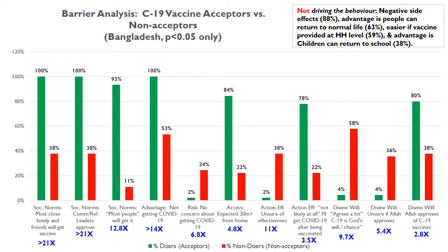Instead, here are the things that were most highly associated with intending to get a COVID-19 vaccine in Bangladesh — all statistically significant associations. Social norms were very powerful: respondents who believe that most close family and friends will get the vaccine were much more likely to say they would get a vaccine. Respondents who said that most community and religious leaders wanted them to get a vaccine were also much more likely to seek it, as well as those who believed most people in general will get it. Believing that not getting COVID-19 is an advantage was also a very important driver. Perceived risk was also important — non-acceptors were 6.8 times more likely to say that they were not concerned at all about getting COVID-19. And perceived access was very important: acceptors were 4.8 times more likely to say that they expected the vaccine to be offered within 30 minutes of their home.